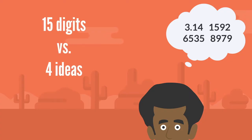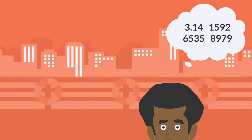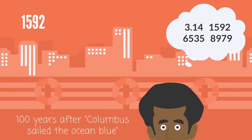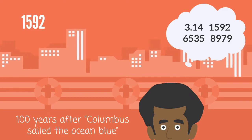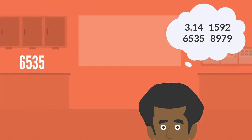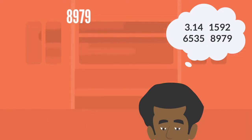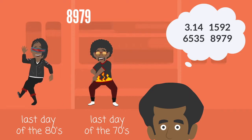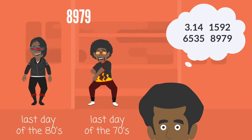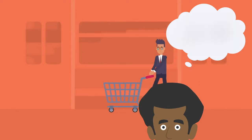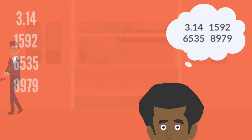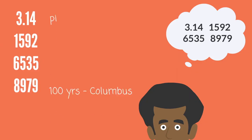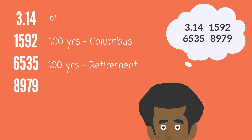The idea is that we've got to make these chunks memorable. 1592 — 1492 is Columbus, so 100 after Columbus. 65, 35 adds up to 100. You retire at 65. 89, 79 — it's like the end of a decade, so it's New Year's Eve 1989 or 1979. What's really relevant to Reading Comp is the amount of effort we have to put in to making these chunks memorable. There's no way to remember 15 things, but there is a way to remember four things if you work at it and you keep saying it back to yourself. It gets shorter every time you say it because you're chunking your chunks.